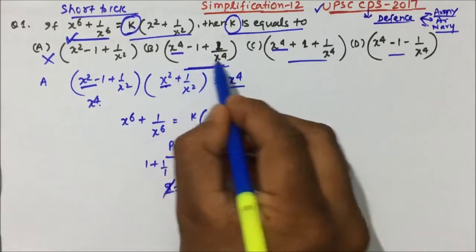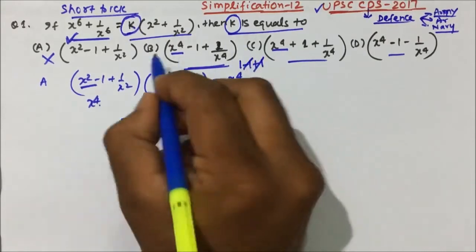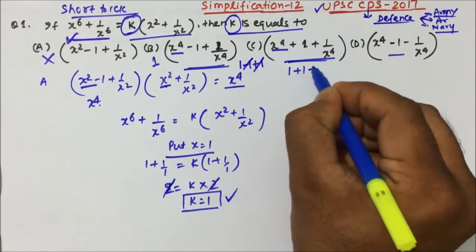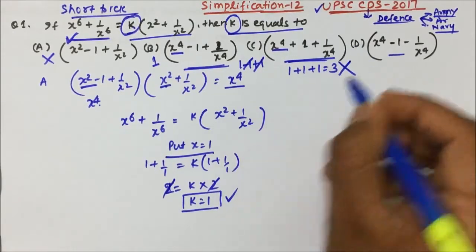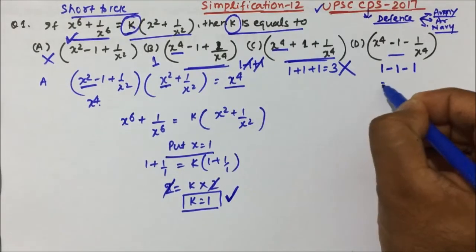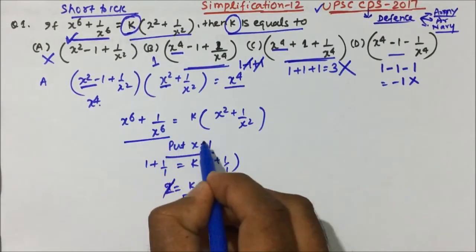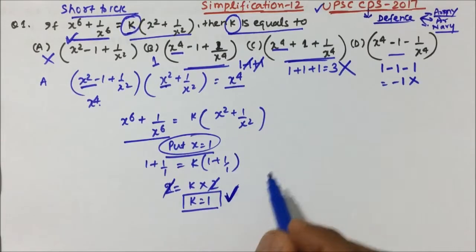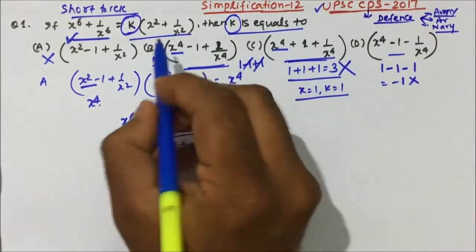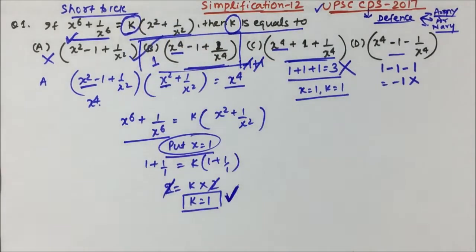Now put x equals 1 in each remaining option and check where you get k equals 1. For option B: 1 minus 1 plus 1 gives 1 — yes, that gives k equals 1. For option C: 1 plus 1 plus 1 gives 3 — so option C is wrong. For option D: 1 minus 1 minus 1 gives minus 1 — but we need k equals 1. So only option B gives k equals 1, which is the correct answer.